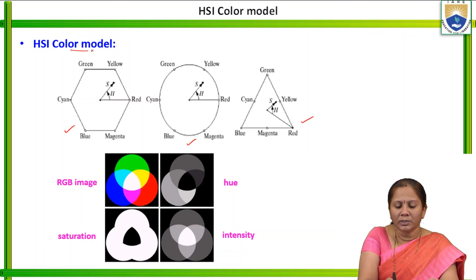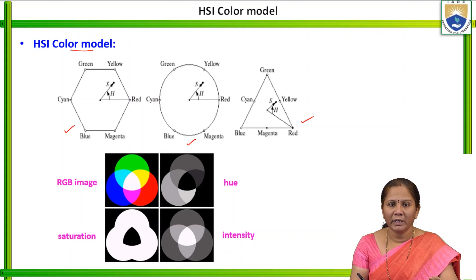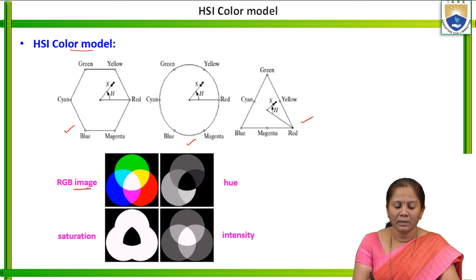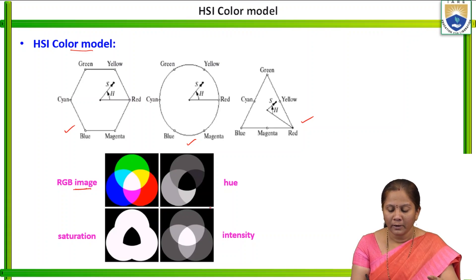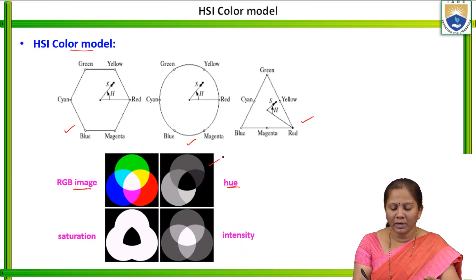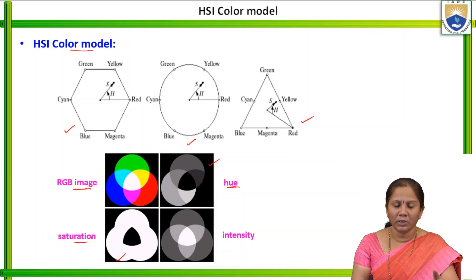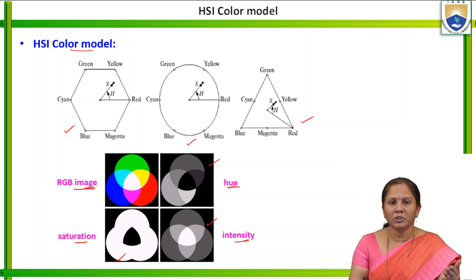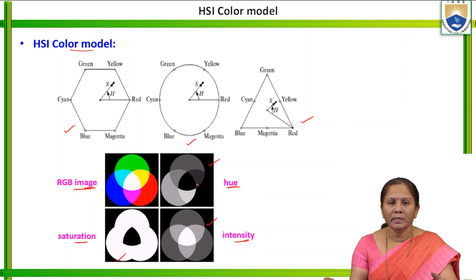In the HSI color model, we can see how hue, saturation, and intensity images are obtained. If we convert an RGB model to the HSI model — this image shows hue, this image represents saturation, and this image represents intensity. When the RGB image is converted into HSI, the images will be represented like this.